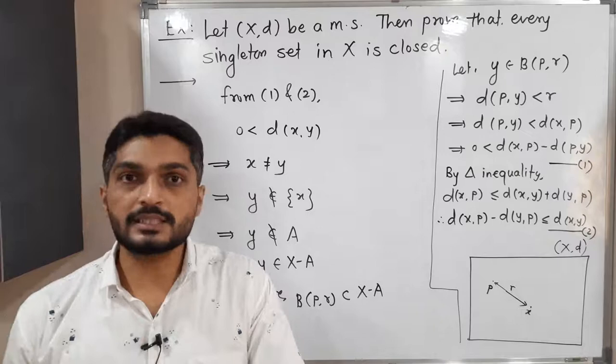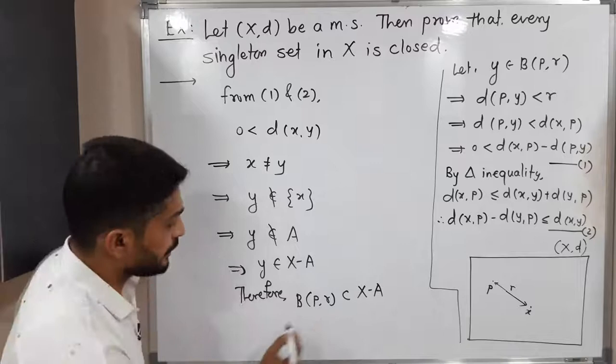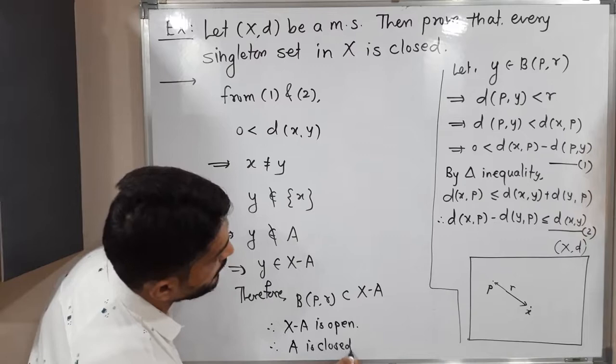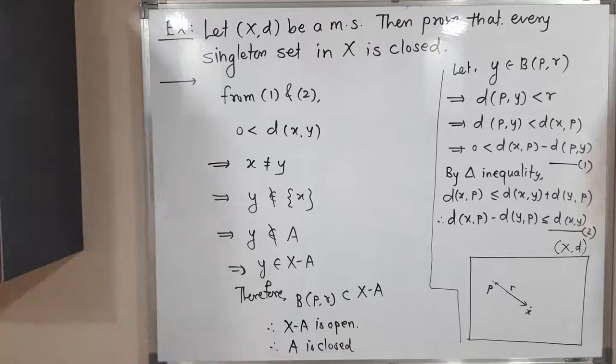Since for any arbitrary point P in X minus A we found a ball around P which is a subset of X minus A, therefore X minus A is open — it satisfies the definition of an open set. Therefore A is closed, since its complement is open. So therefore every singleton set is closed in X.